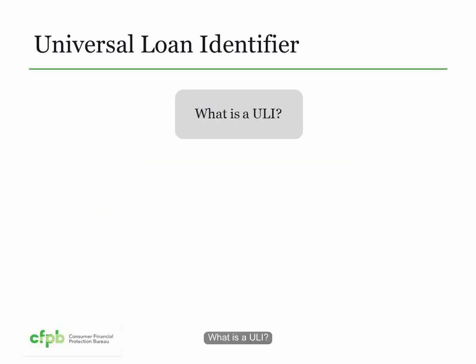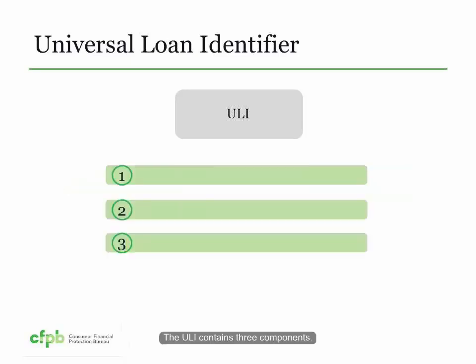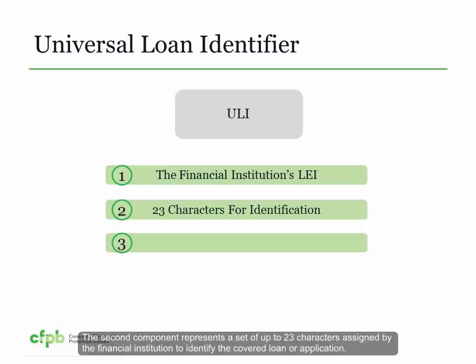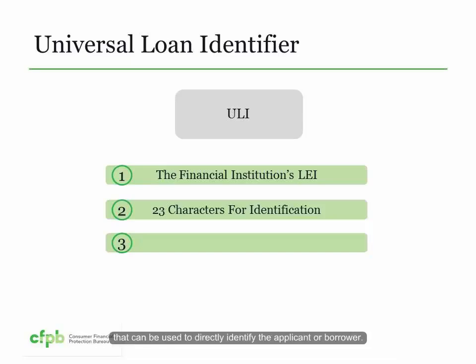A financial institution will need its LEI number in order to create a ULI for each application received, for each covered loan it originates, and where applicable, purchase covered loans. All covered loans and applications reported on your HMDA submission must include a universal loan identifier, known as the ULI, prescribed in section 1003.4(a)(1)(i) of the final rule. A ULI is an identifier that can be used to identify and retrieve the covered loan or application file.